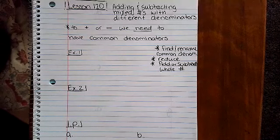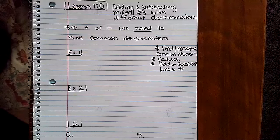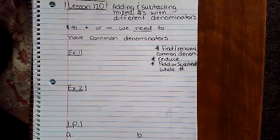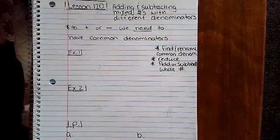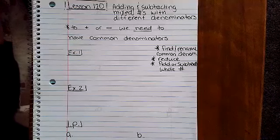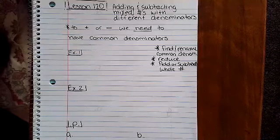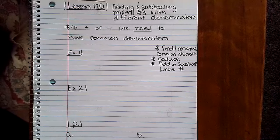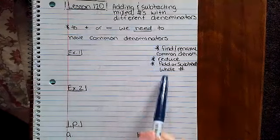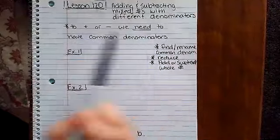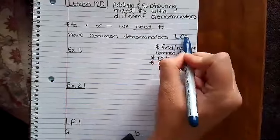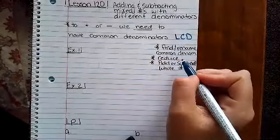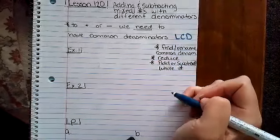All right, adding and subtracting mixed numbers with different denominators. We've taken regular fractions with different denominators, we've renamed them, and then we've added and subtracted. Now it's time to take mixed numbers and do that. So in order to add or subtract mixed numbers, we have to make sure that the fractions have common denominators. So let's get started. First things first, we're going to take example number one, dive right in, and we'll go through it. I've listed a couple of the steps here and key things to remember. Remember, you have to have common denominators or you can have the LCD, the least common denominator. To find and rename common denominators, that's what you need to do first, then you need to reduce, and then you need to add or subtract your whole numbers.